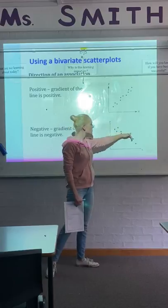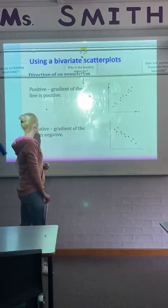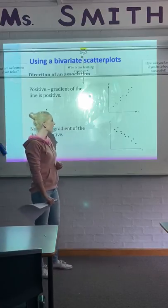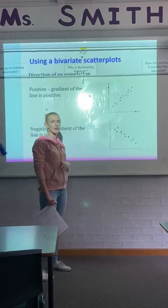Negative - our dots form a line that's going downward, so it's decreasing. We say that the gradient of the line is negative, and that's the negative association between the two variables.